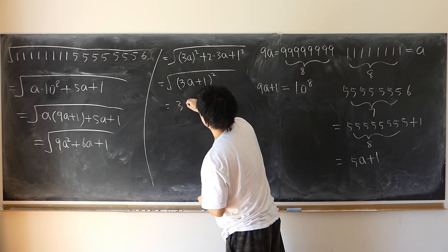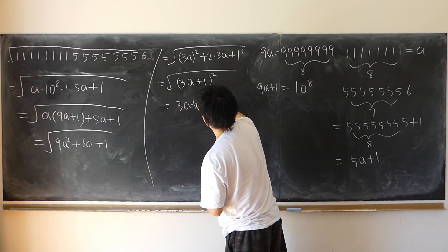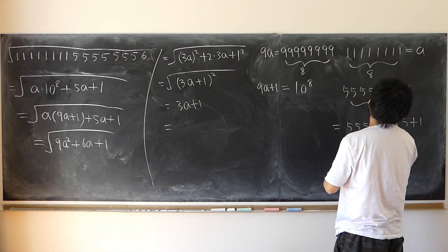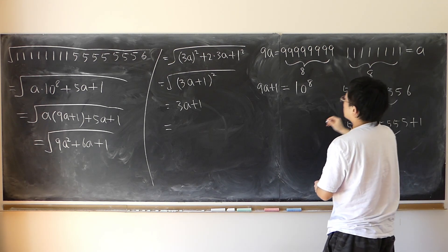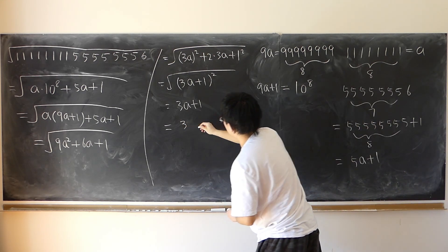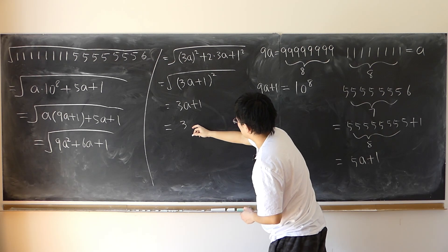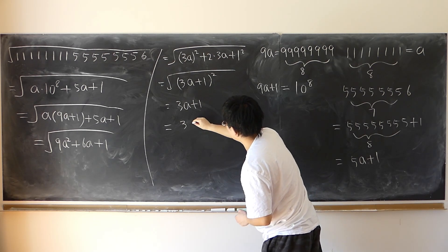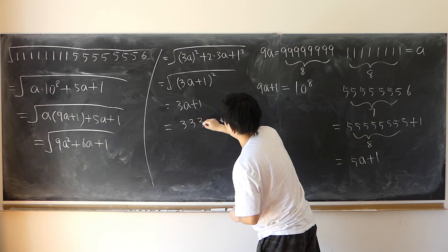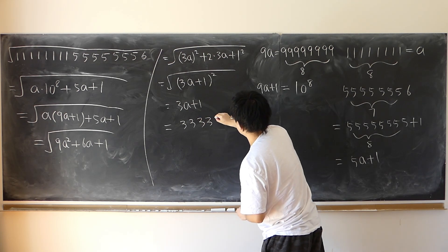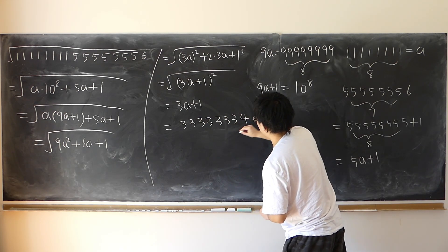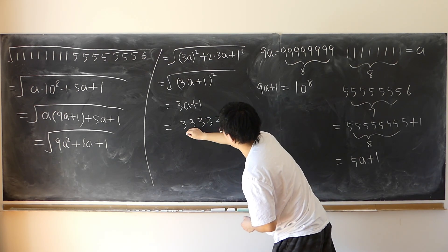So the answer is three A plus one. That's three times eight threes plus one — seven threes followed by four. One, two, three, four — got seven threes followed by four.